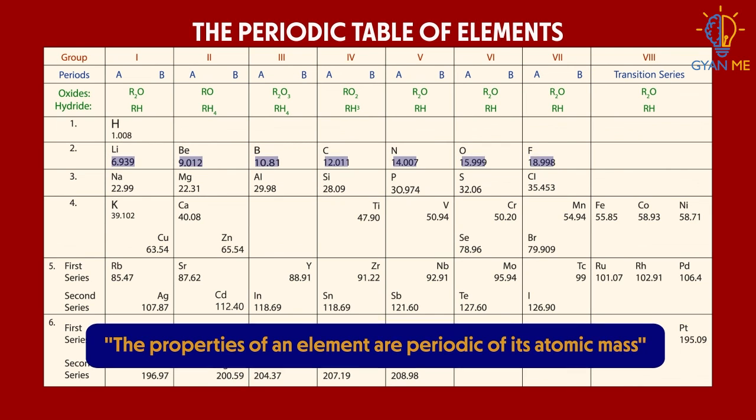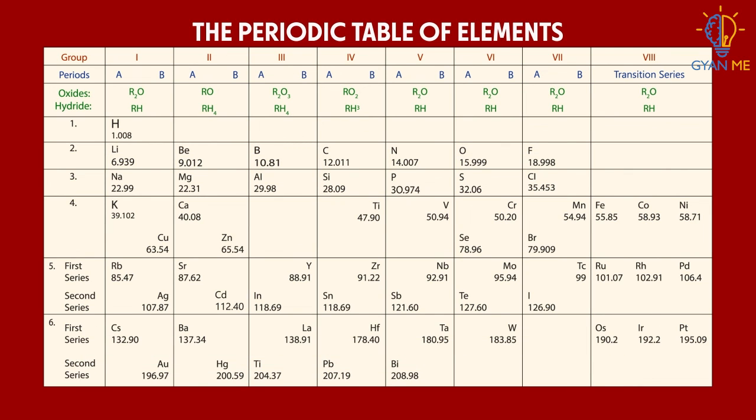Let us interpret this rule. Mendeleev's periodic law states that physical and chemical properties of the elements are repeated after a certain interval or a fixed interval of time as the elements are arranged in increasing order or ascending order of their atomic mass.